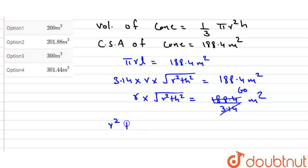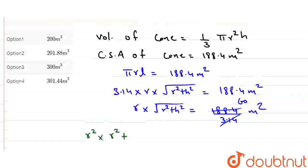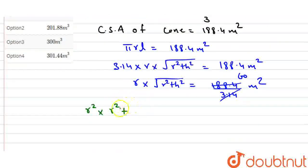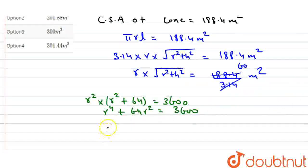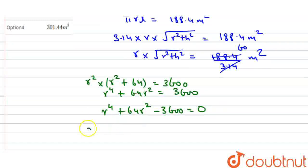Now squaring both sides, the square root is eliminated. We get r squared times the quantity r squared plus 64 equals 3600, since h equals 8 meters and 8 squared is 64, and 60 squared is 3600. This gives us r to the power 4 plus 64 r squared equals 3600.